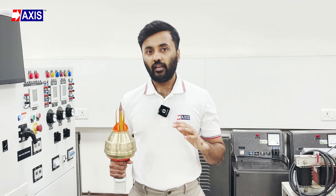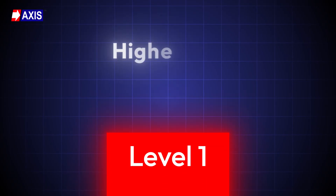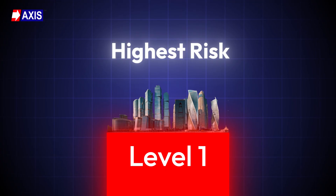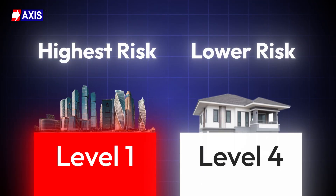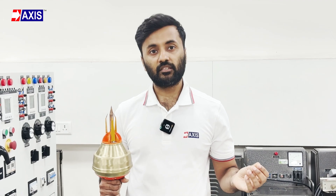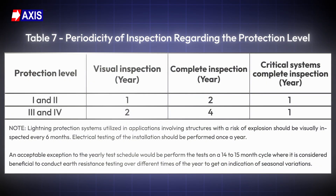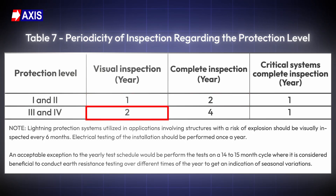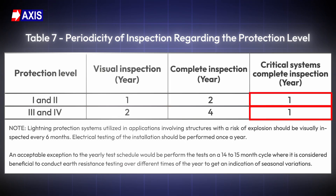Sixth, verification: lightning protection systems are classified by risk from level 1 to level 4. Level 1 is for the highest risk, like tall buildings or sensitive sites; level 4 is for low-risk areas like small structures. The lightning protection system must be verified after the ESE arrester is installed and checked at regular intervals as specified in table 7 of NFC 17-102. For protection levels 1 and 2, a visual check is needed every year and a full check every 2 years. For levels 3 and 4, the visual check is needed every 2 years and the full check every 4 years. Critical systems must be fully inspected every year, no matter the level.